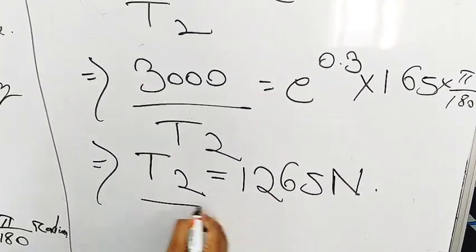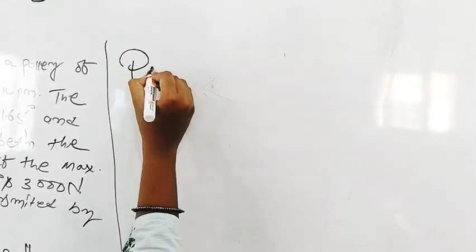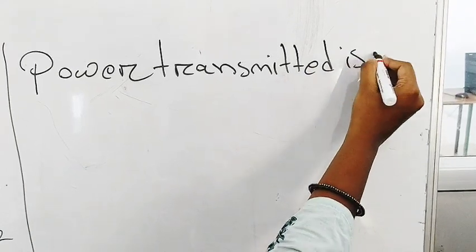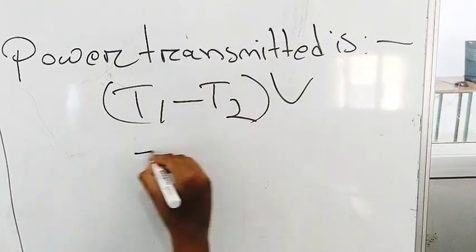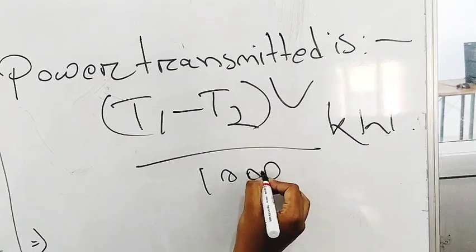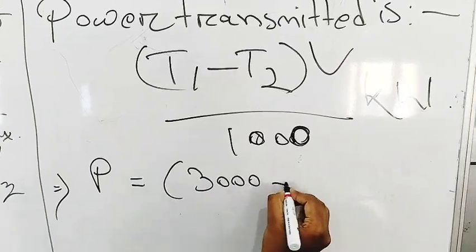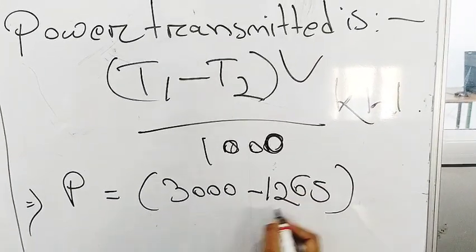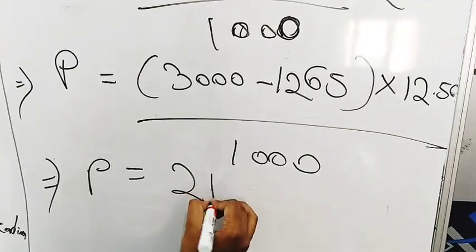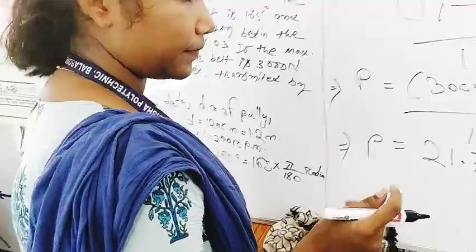So we have T2 and we have velocity and we have T1. So the power transmitted is T1 minus T2 into V divided by 1000 kilowatt. So P is equal to 3000 minus 1265 into 12.56 divided by 1000. The answer will be P is equal to 21.79 kilowatt. Thank you. All the best.